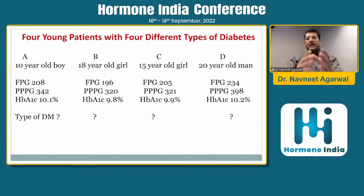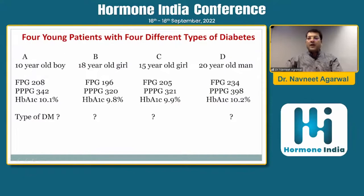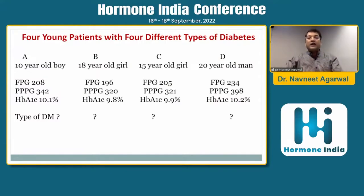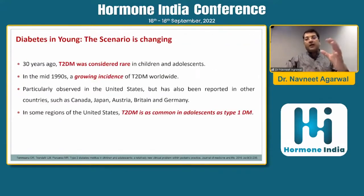To carry the discussion forward, let's take an example of four hypothetical patients. All four have an A1C of around 9 to 10, and the fasting plasma glucose and postprandial glucose are almost equal across all four cases. But do you feel the type of diabetes is the same in all four patients? Not necessarily — though they are similar age-wise, FPG-wise, PPG-wise, and A1C-wise, they might have different types of diabetes. Let's see how we can differentiate and make a differential diagnosis.